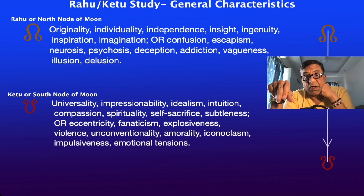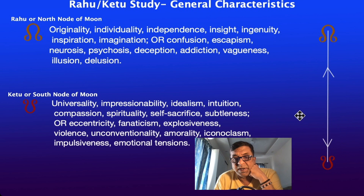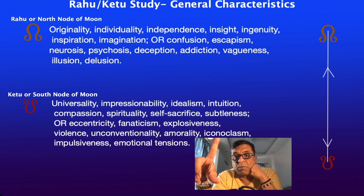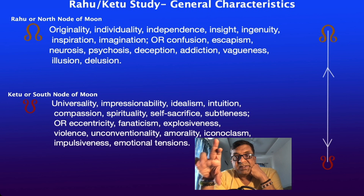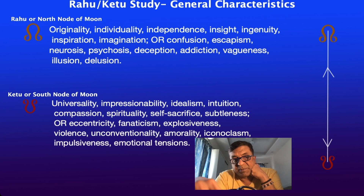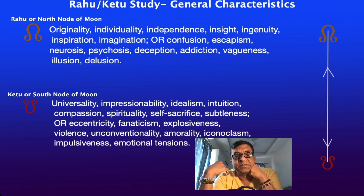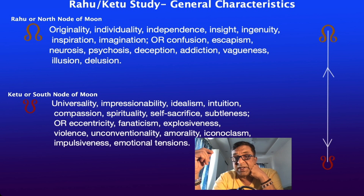Rahu Ketu is typically an axis — 180 degrees apart — and it can play out in any one of the opposite houses: 1-7, 2-8, 3-9, 4-10, and so on. This axis becomes a definition point of where in your life, in your different houses, you are looking for these two aspects. If Rahu is in the second house, Ketu will be in the eighth house, and it plays out with something called dispositors.